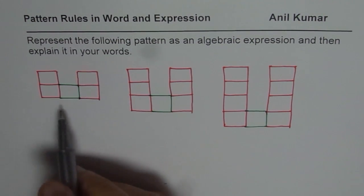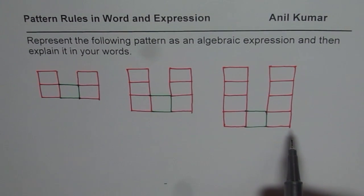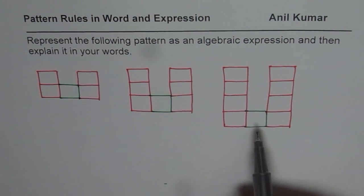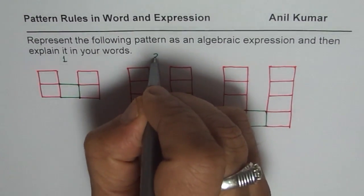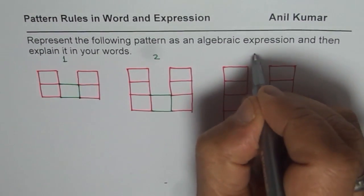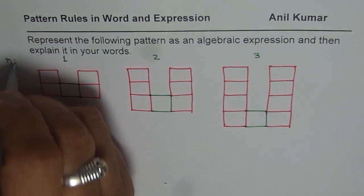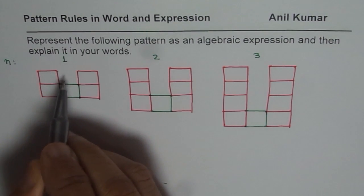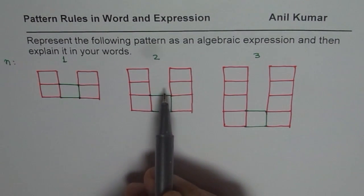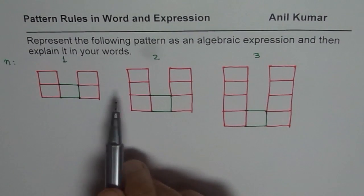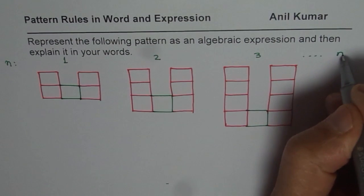So that is the pattern given to us. Imagine that these are all square blocks. What we have here is pattern number one, pattern number two, and pattern number three. So that is the value of n — the number of the pattern. Or you can sometimes say figure number one, figure number two, figure number three, and this could continue to any value n.